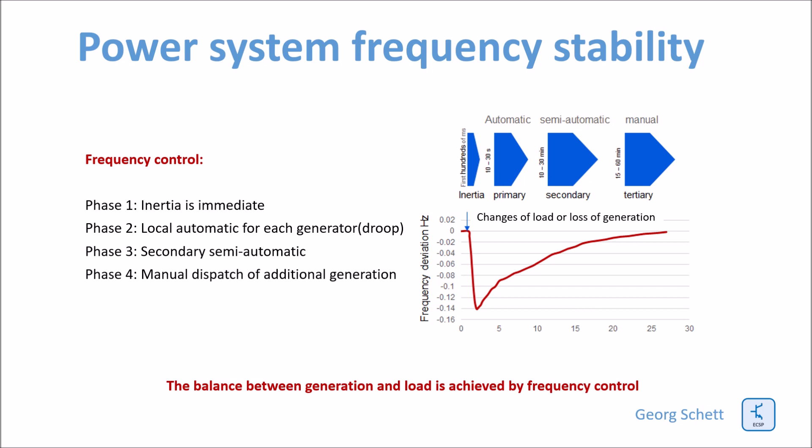The frequency control is performed as follows. After a change of the load or a loss of generation, there are three consecutive phases. The first phase, phase one, is immediate. And in this phase, the demand is met by using the stored energy in the rotating mass of the generation involved.